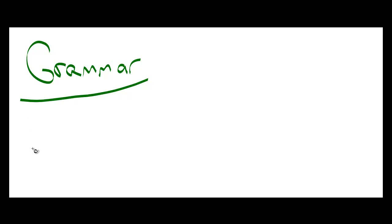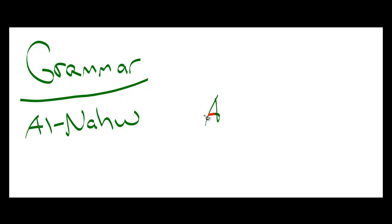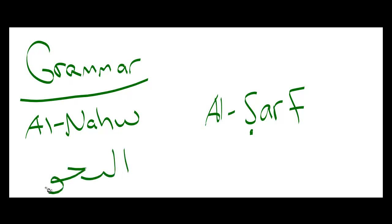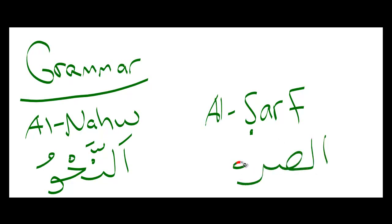In grammar, we have two main sciences. The first science is an-nahu, and the second science is as-sarf. So we have ilmu an-nahu, as it's called in Arabic, and we have ilmu as-sarf, or the knowledge of sarf.